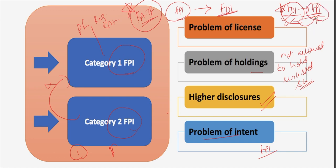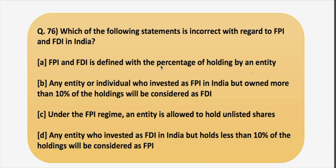Moving back to the question, the incorrect statement is option C — that under the FPI regime an entity is allowed to hold unlisted shares — because the truth is they are not allowed to hold unlisted shares. Option A is correct since the 10 percent threshold defines FPI and FDI. Options B and D reflect the reclassification rules we discussed. So the correct answer is option C.